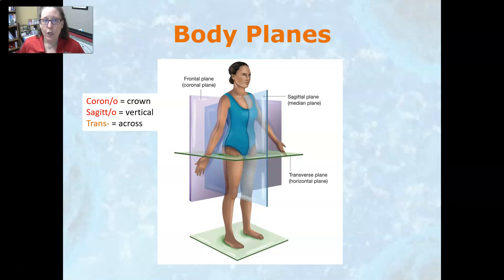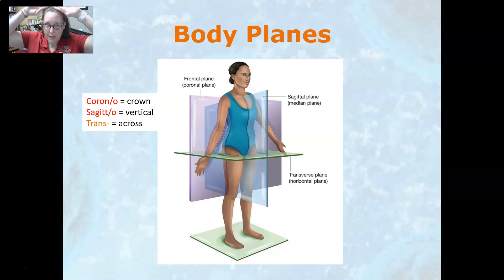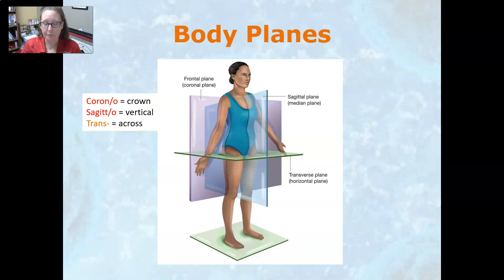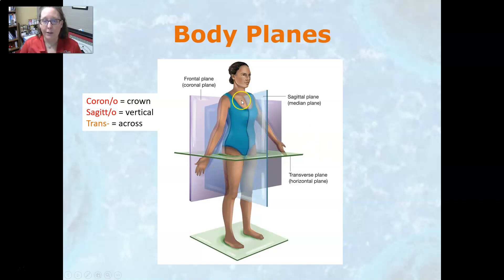The body planes are produced by slicing the body in a certain way. The frontal or coronal plane — think 'corona,' like a crown at the top of the head — goes down and divides the body into front and back, or anterior and posterior halves. The sagittal plane, also known as the median plane, is vertical and goes to the middle of the body, dividing it into right and left halves.